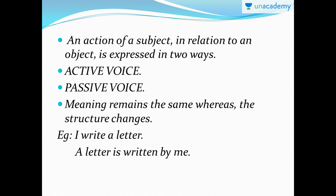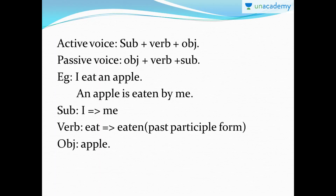The passive voice sentence is: 'A letter is written by me.' Here the subject 'I' changes to 'me', and the verb 'write' is put in the past participle form along with 'is', 'am', or 'are' in simple present tense. The object 'a letter' remains the same — you cannot change an object. So active voice is Subject-Verb-Object; passive voice is Object-Verb-Subject.